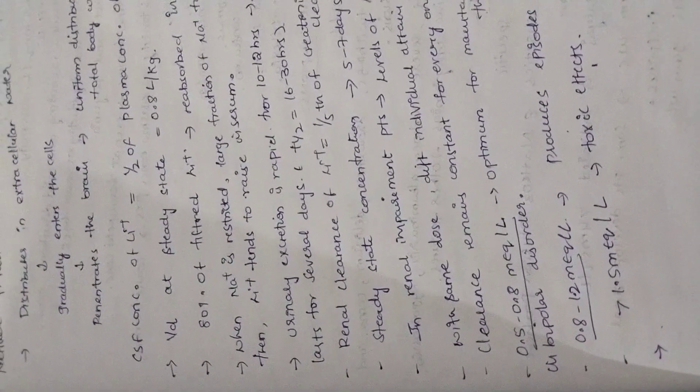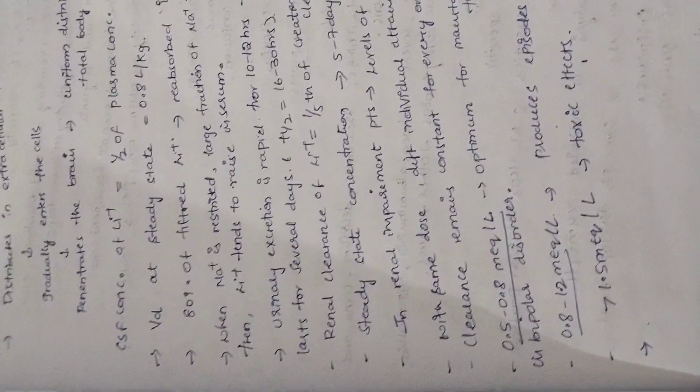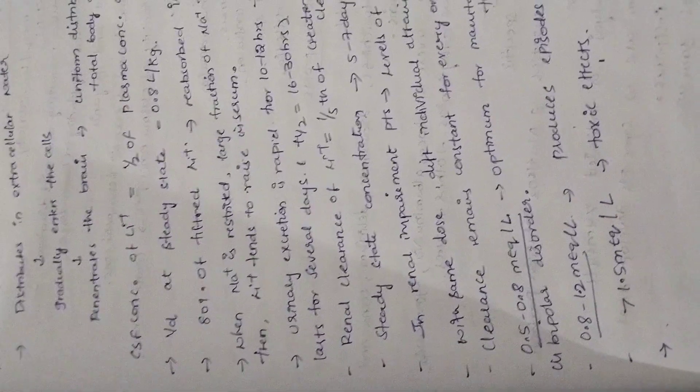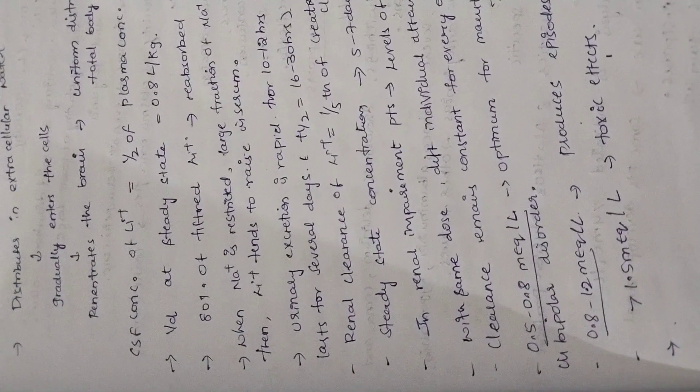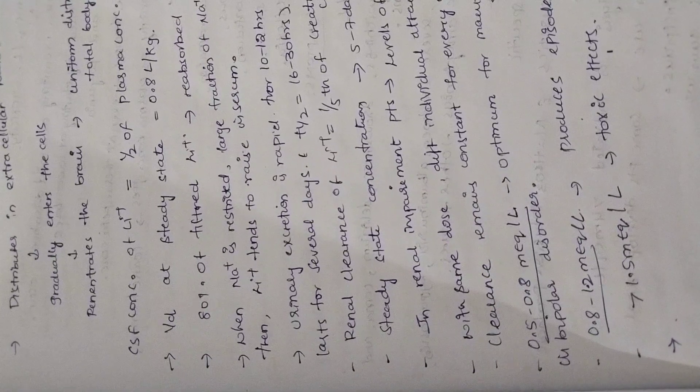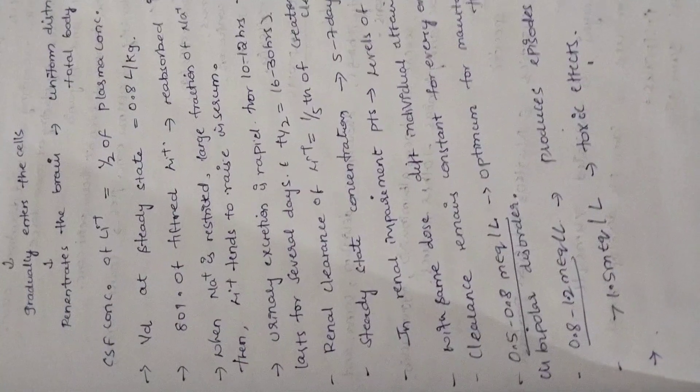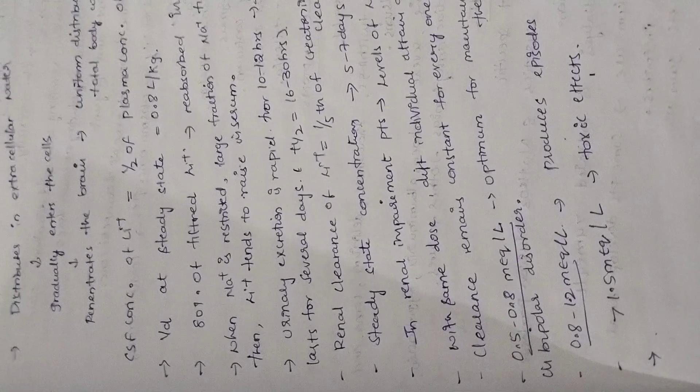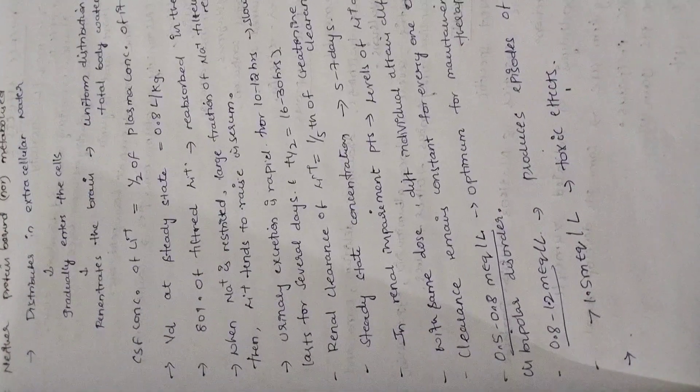CSF concentration of lithium will be equal to half of the plasma concentration. VD, volume of distribution at steady state, is 0.8 liter per kg, meaning total amount of lithium present to that of the plasma concentration. 80% of filtered lithium, like sodium, is filtered 80% and reabsorbed mostly in the PCT, proximal convoluted tubule.